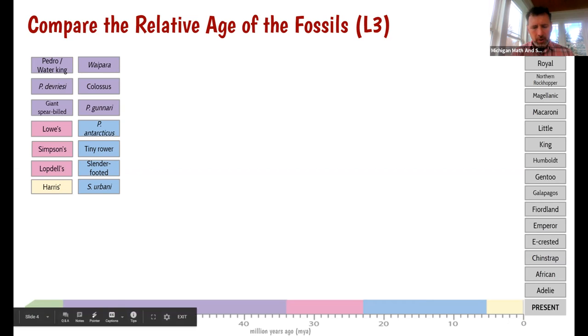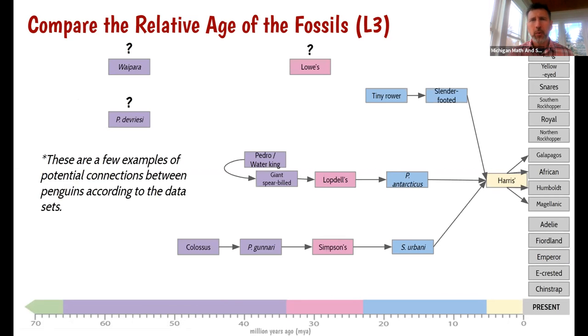In this case, though, because I do have Presenter View, I want to show you an example of what it could look like if it were completed. And so I took the data strips, organized them, and these were some examples of connection or potential connections that I came up with. Just to show you what it could look like. And so this is the example here with Pedro in the center and showing how he may be closely related to this giant spear-billed penguin, which appeared to be related to lopdells and then this Antarcticus harris. And this harris looked like it could go in any direction between these four types of penguins. So this harris might have led us to Galapagos or African or Helmholt or even the Magellanic. At any rate, hopefully you'll find this helpful.